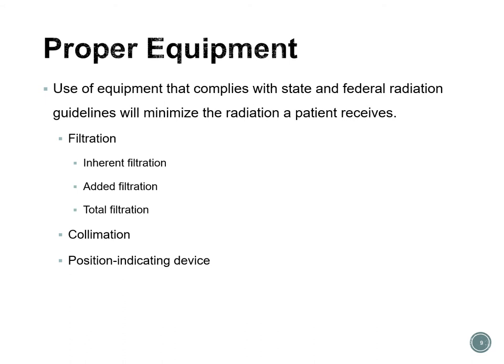Proper equipment means using equipment that complies with state and federal radiation guidelines to minimize the radiation a patient receives. We're going to talk about filtration—the differences between inherent filtration, added filtration, and total filtration—as well as collimation and position indicating devices. The x-ray tube head should be properly equipped with aluminum filters, a lead collimator, and a PID in order to do the best job we can for our patients.